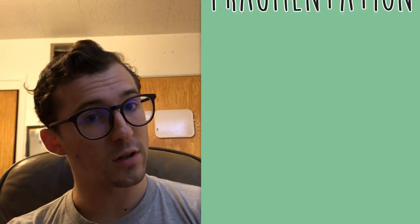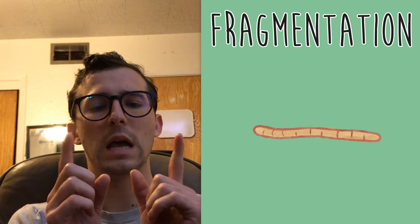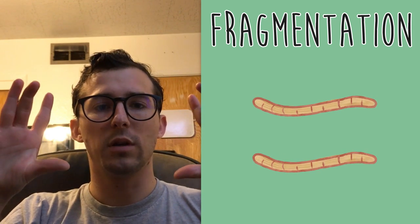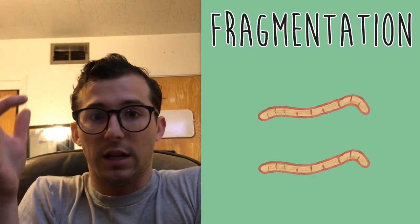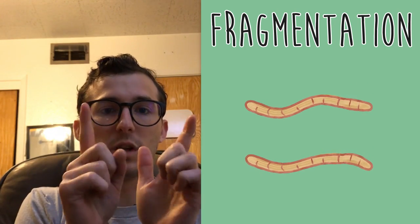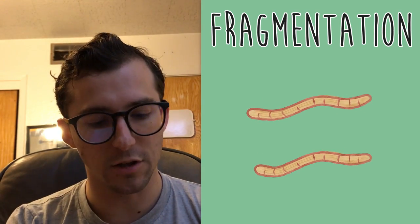Another type is called fragmentation, and that's with starfish and worms. If a worm gets cut in half, sometimes that worm will grow into two identical worms — each becomes its own creature. It was one creature cut in half that grew into two. That's called fragmentation. Those two methods — binary fission and fragmentation — I'm pretty sure are not how the Woggle is reproducing, because it's still one creature and there aren't two of them.